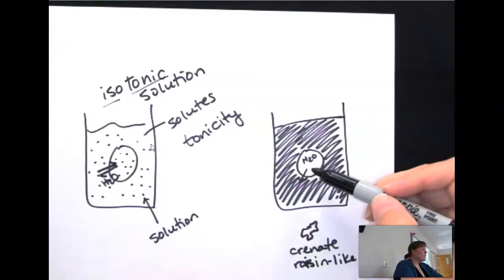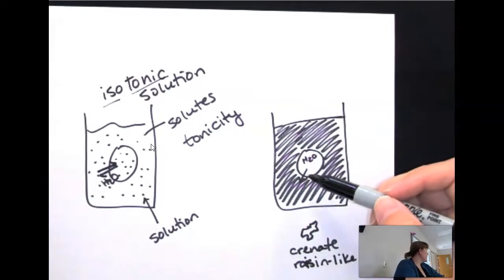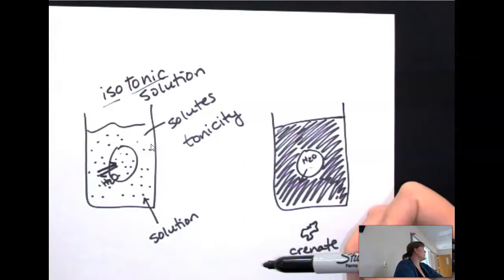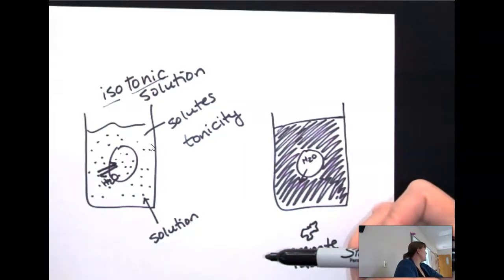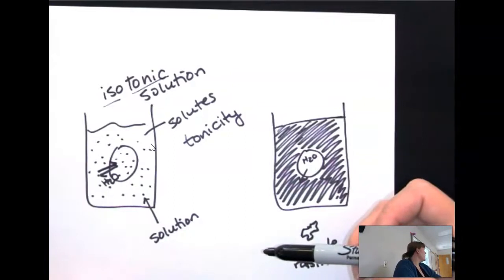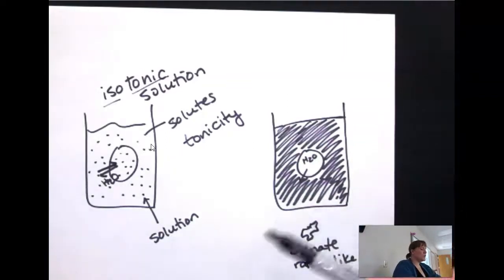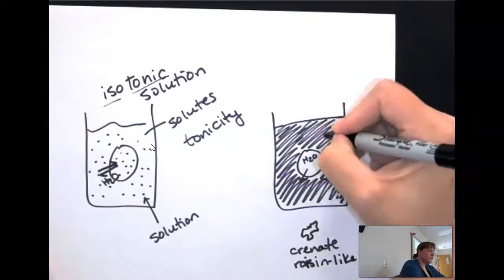When we drink soda instead of water, then we're actually pulling water out of our cells rather than hydrating ourselves. When you eat a piece of fruit or something like that, it has a lot of water in them because it's made out of cells. When you're drinking a soda or something with high concentrations of sugar, you're dehydrating yourself.